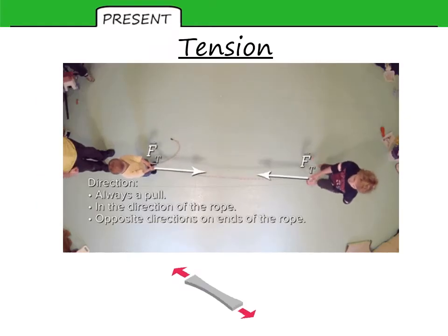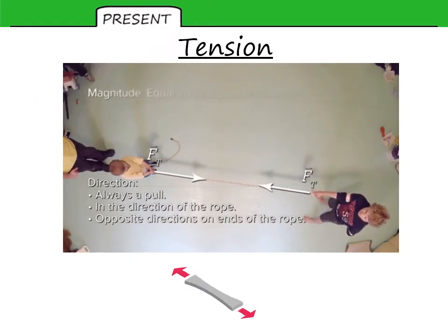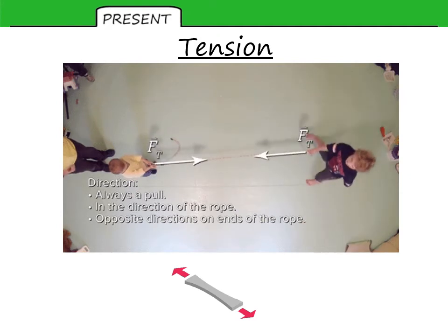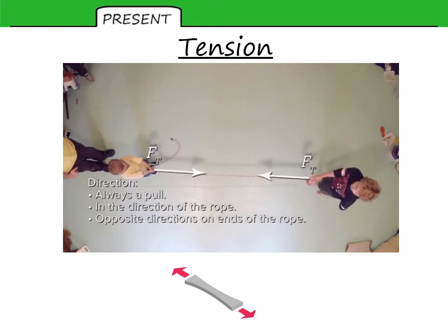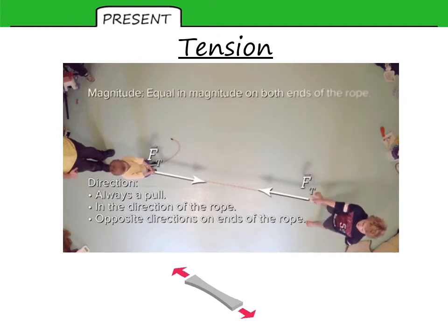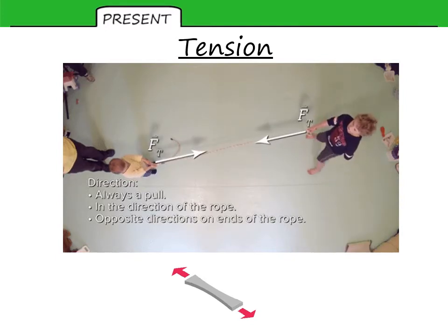Tension, such as the tension in this rope here, is clearly a contact force. Without pulling on the rope, there will be no tension involved.